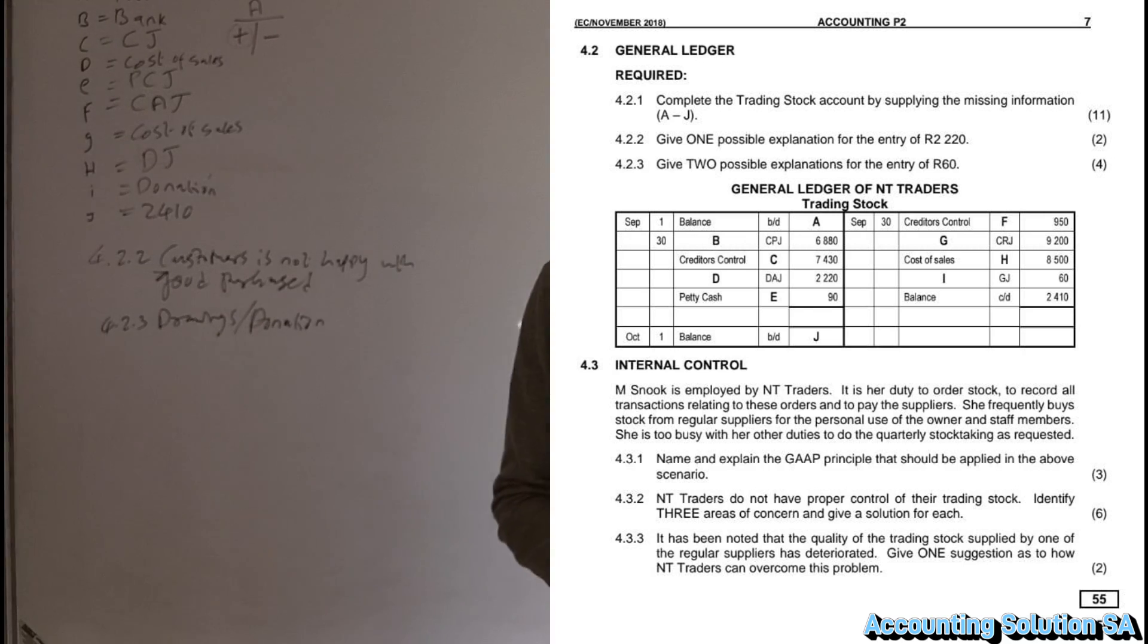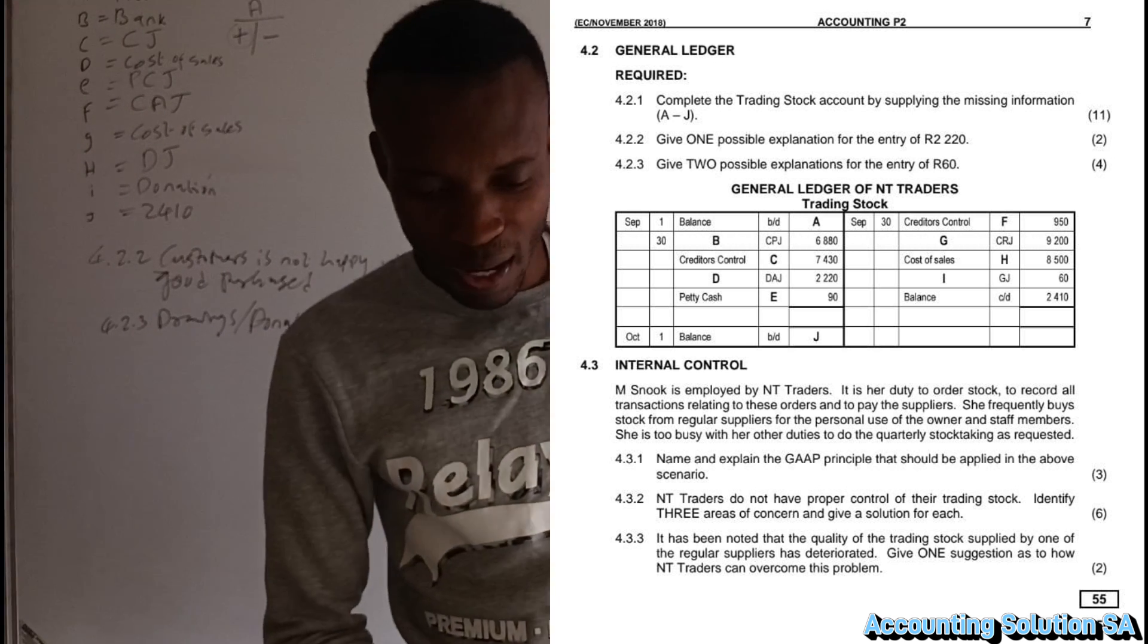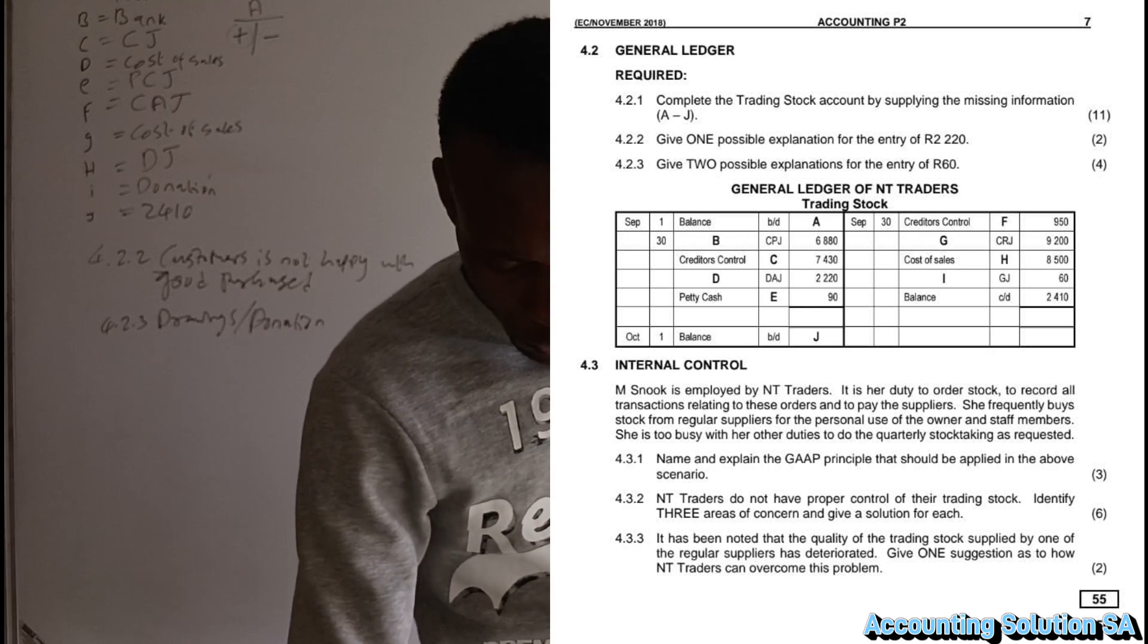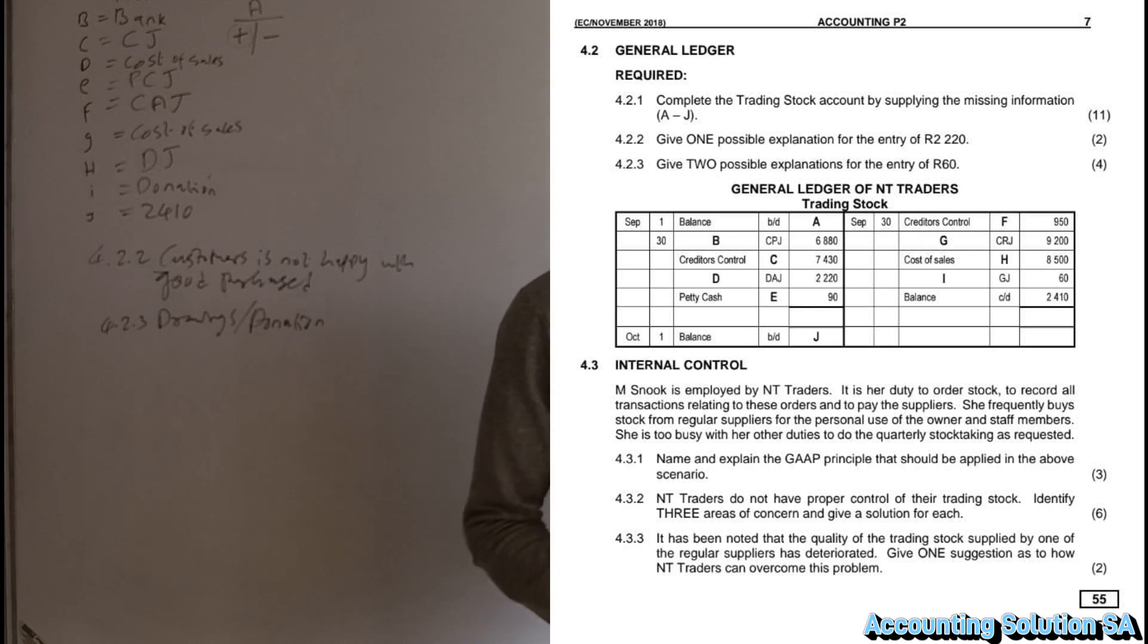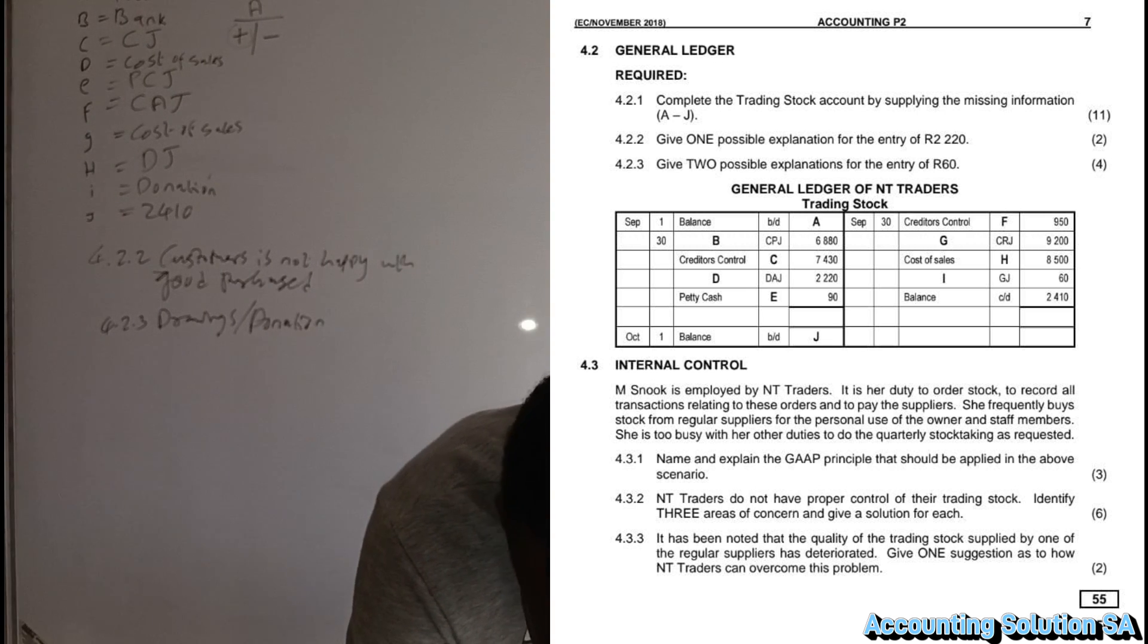Then the following one, 4.3.1: Name and explain the GAAP principle that should be applied in the above scenario. We need to read the scenario. M-Snog is employed by NTK traders. It is her duty to order stock, to record all transactions relating to these orders, and to pay suppliers. She frequently buys stock from regular suppliers for the personal use of the owner and staff members. She is too busy with her duties to do a quarterly stock taking as requested.